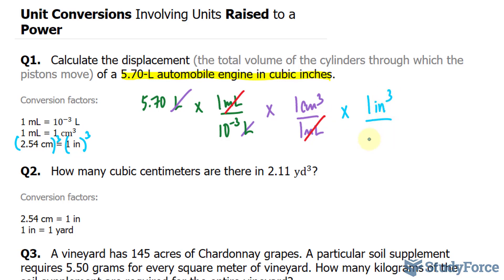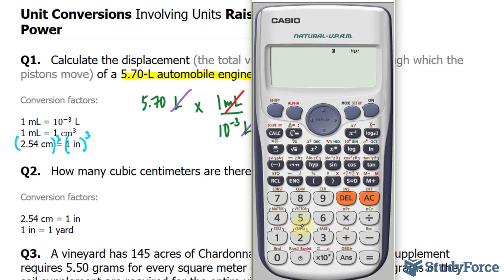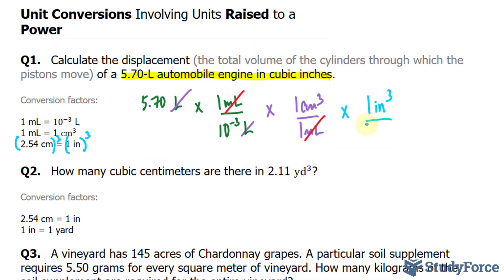So this part right here, 1 inch cubed over - and remember this 3, we are taking 1 to the power of 3 and inches to the power of 3. So 1 to the power of 3 is 1 and inches to the power of 3 is inches cubed. Similarly, 3 as a power to 2.54 gives us 2.54 to the power of 3, which is 16.387064. Instead of writing all of this, I'm just going to write 2.54 to the power of 3 and centimeters to the power of 3. This centimeters to the power of 3 cancels out with this one and the last unit we have is inches cubed.